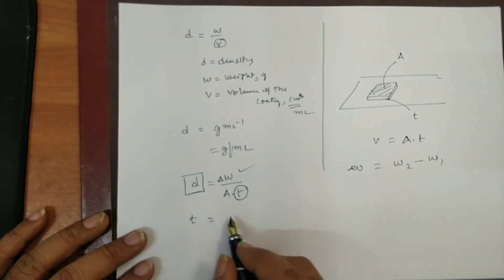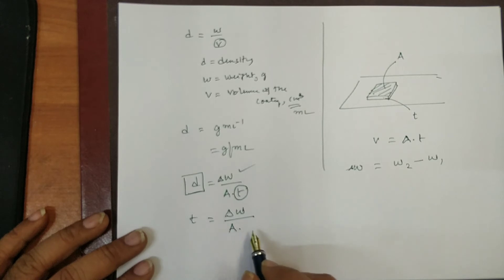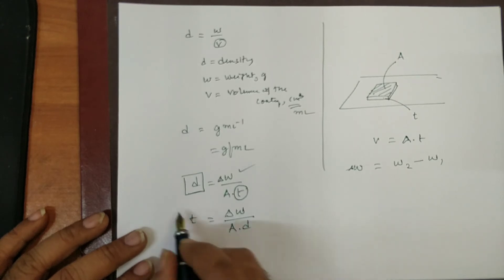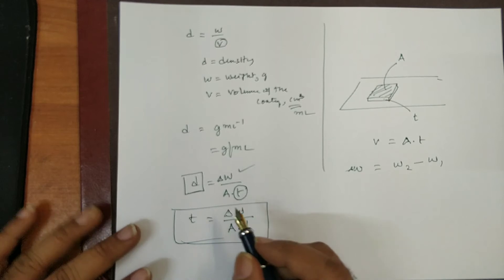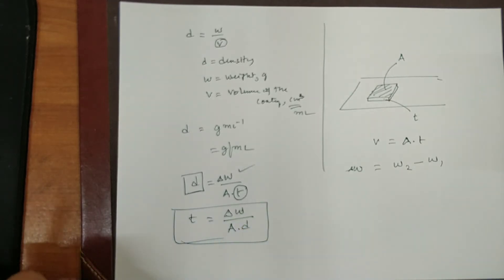So, I know the weight difference. I know the area. It can be easily measured. And based on this I can calculate the thickness provided I know the density of the coating material. So, the coating thickness is equal to the weight difference divided by area of coating into the density of the material. So, based on that we can get the coating thickness.